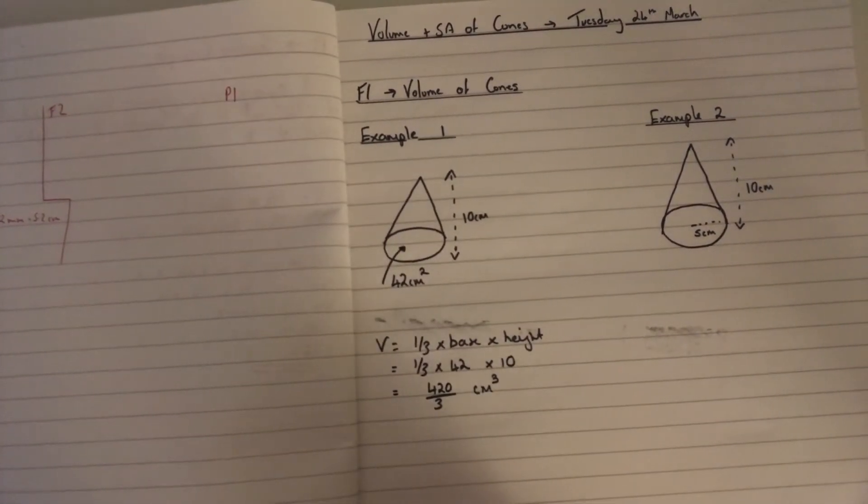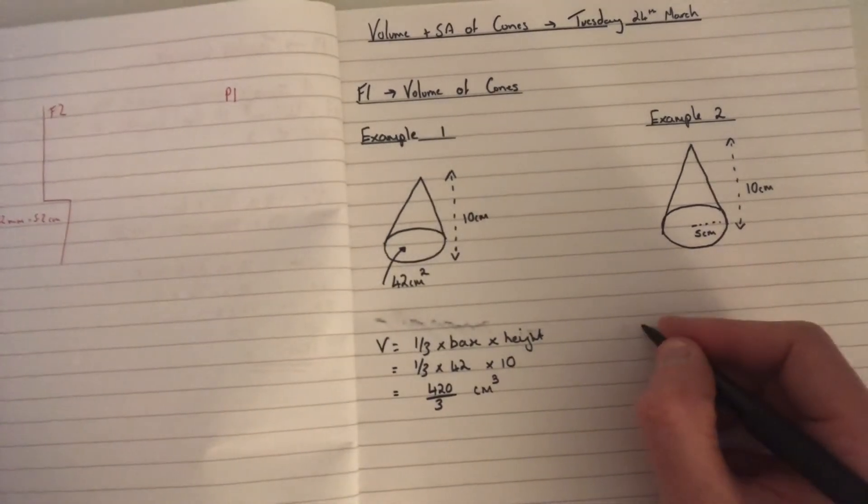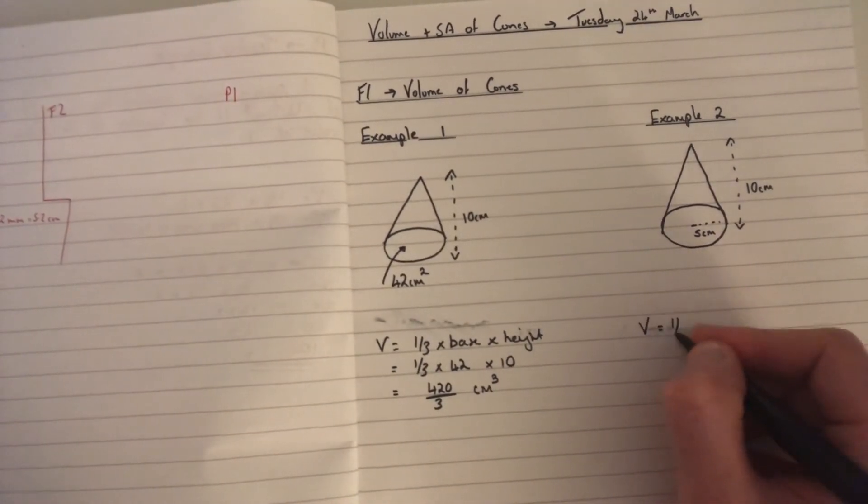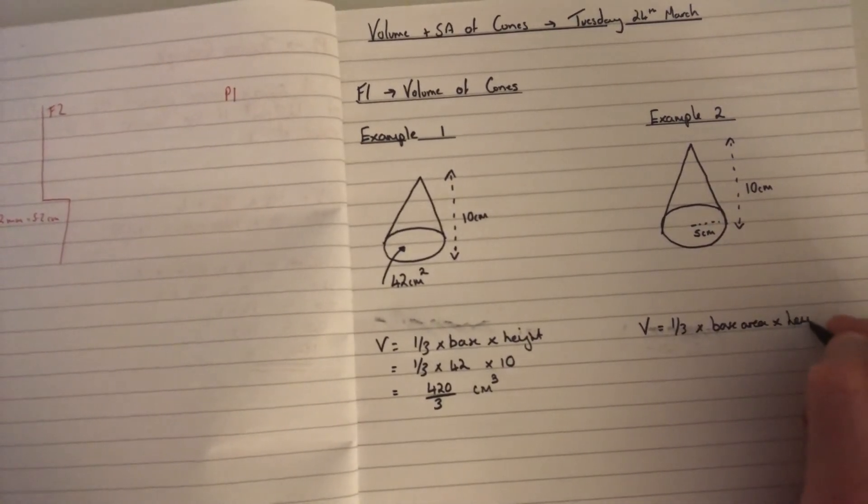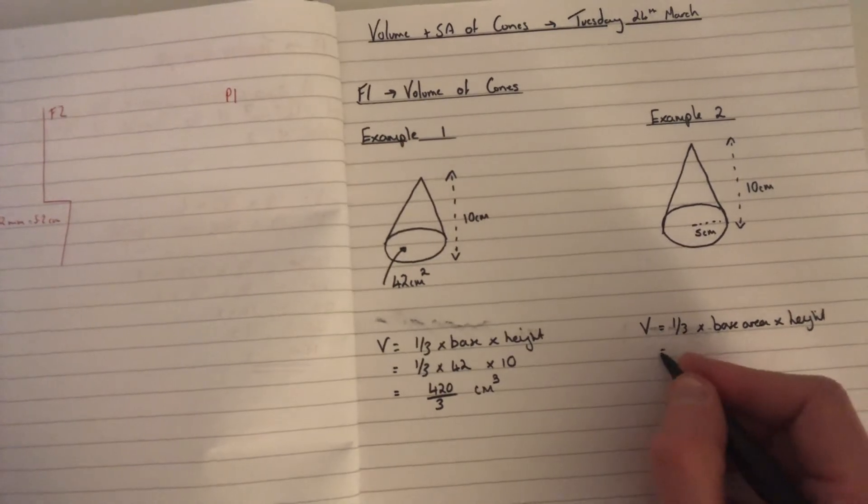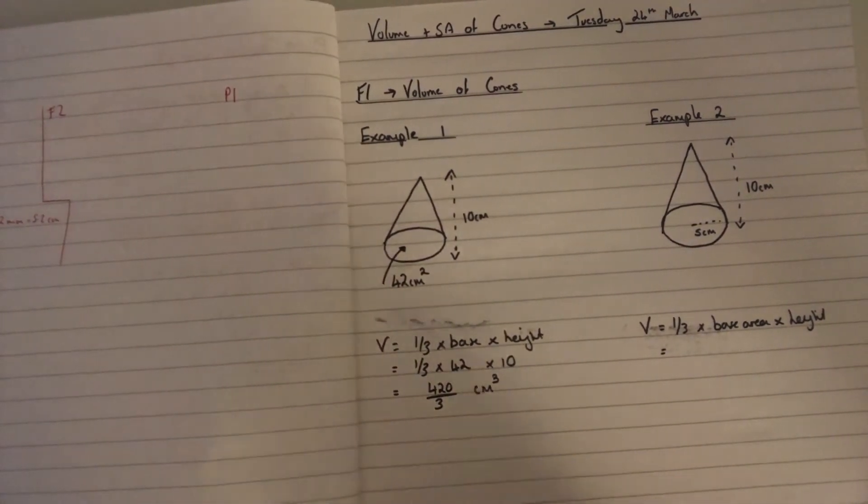I can stick that in the calculator and get the answer there. Now in the second example the formula is still the same, a third times by the base area times by the height. However, we're not given the area of the base bit, so we need to work that out.